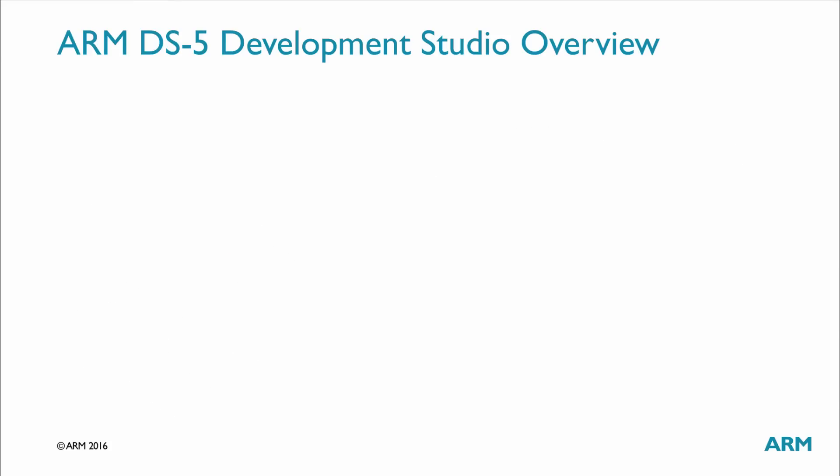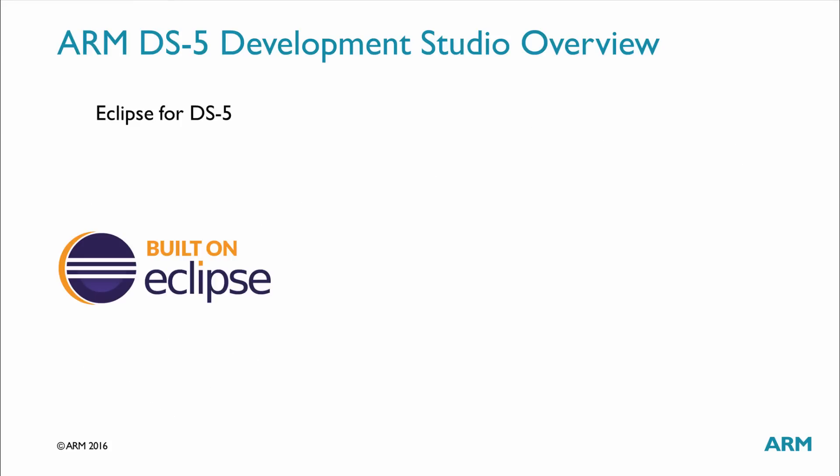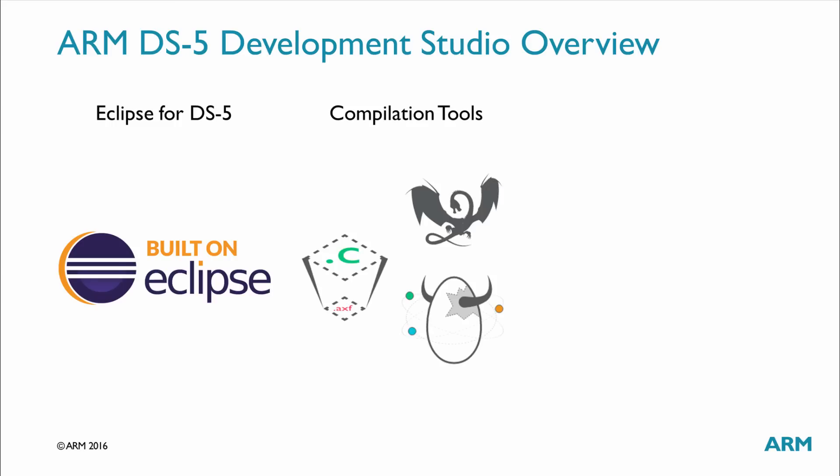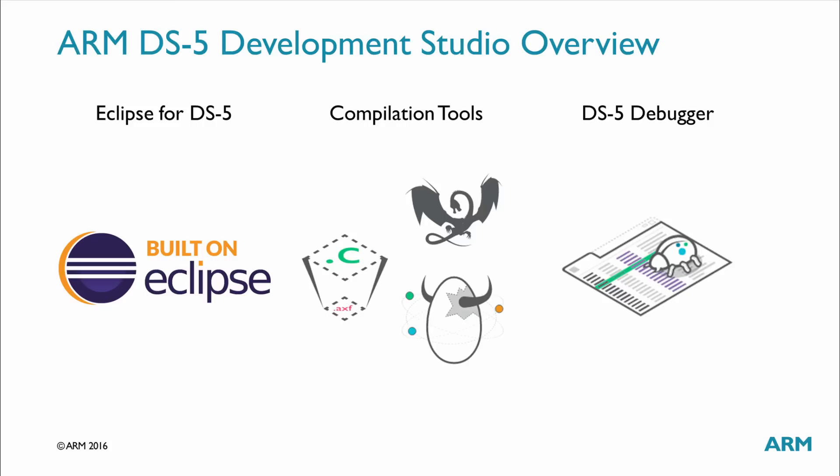DS5 is made up of the following components. Eclipse for DS5 is an integrated development environment that combines the Eclipse IDE from the Eclipse Foundation with the compilation and debug technology of the ARM tools. ARM Compiler 5 and ARM Compiler 6 toolchains enable you to build embedded and bare-metal code. The DS5 Debugger is a graphical debugger supporting end-to-end software development on ARM processor-based targets and fixed virtual platform targets.